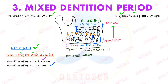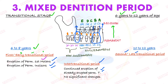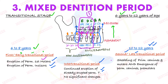After that there is the inter-transitional period — not much is happening; already erupted teeth continue erupting with no significant changes. Then comes the second transitional period or late transitional period, from 10 to 12 years. The remaining deciduous canines, first molar, and second molar will be replaced by the permanent canine, first premolar, and second premolar. Note that premolars are replacing the deciduous molars. The second thing happening here is eruption of permanent second molars.